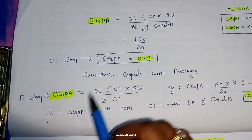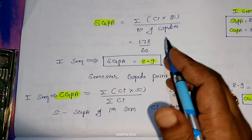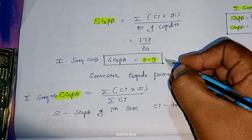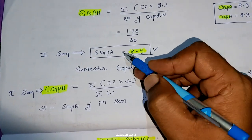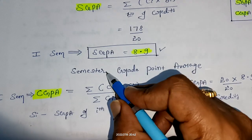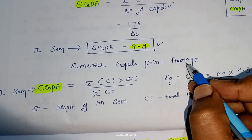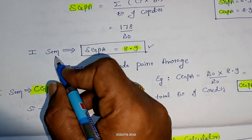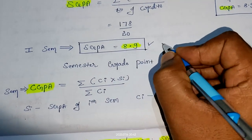If you do 178 by 20, you are going to get SGPA as 8.9. This is just simple division. So this is the semester grade point average of the first semester.